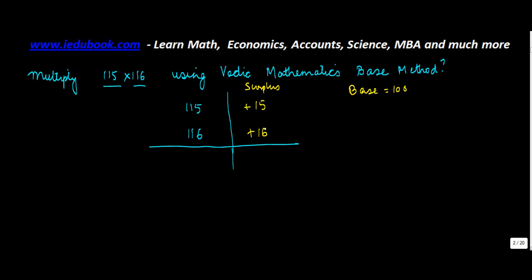The first thing you do is multiply the two surpluses amongst themselves. So you multiply 16 into 15. This will give you 240, so you write +240 here. What's the second step?